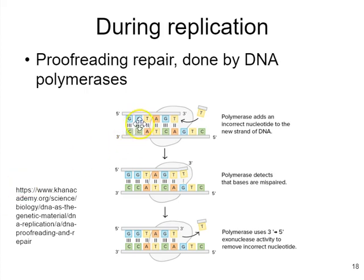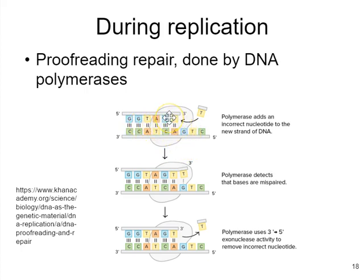Here is a strand of DNA that's the template on the bottom. Up on the top, this is the new strand being copied, with nucleotides being added to the three prime end of the growing strand. DNA polymerase is cruising down the template building this new strand. At this position, a C should be going in, base pairing with that G for correct copying. Instead, a T is going in.